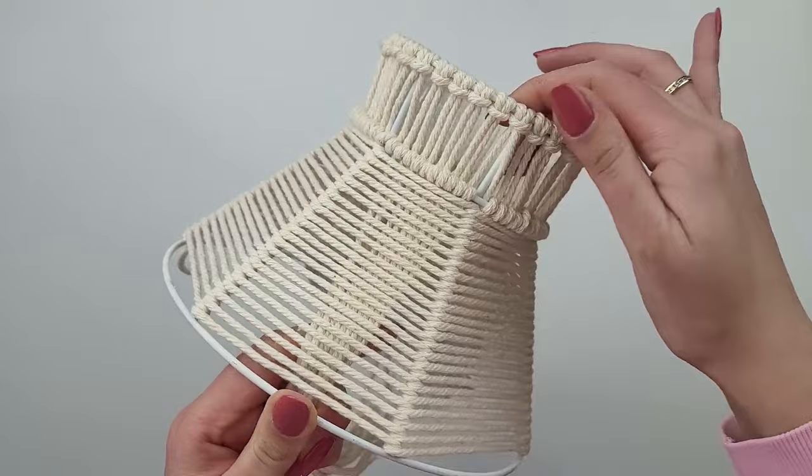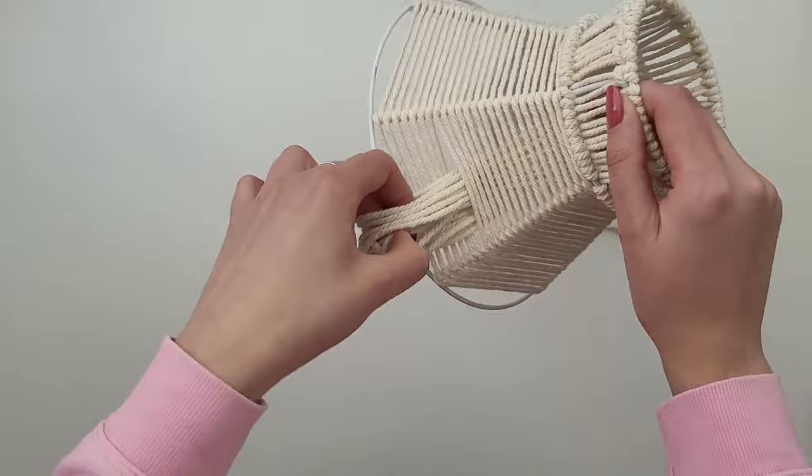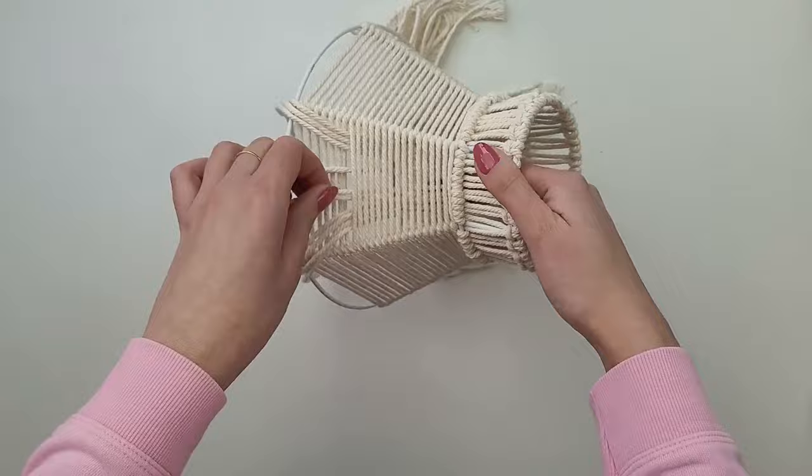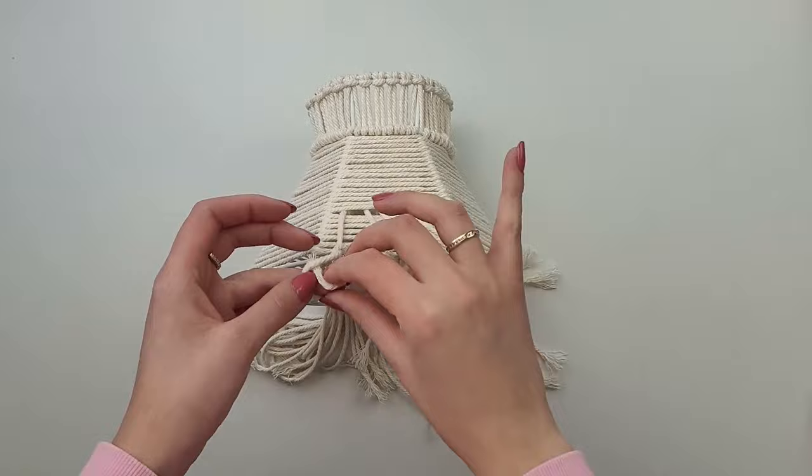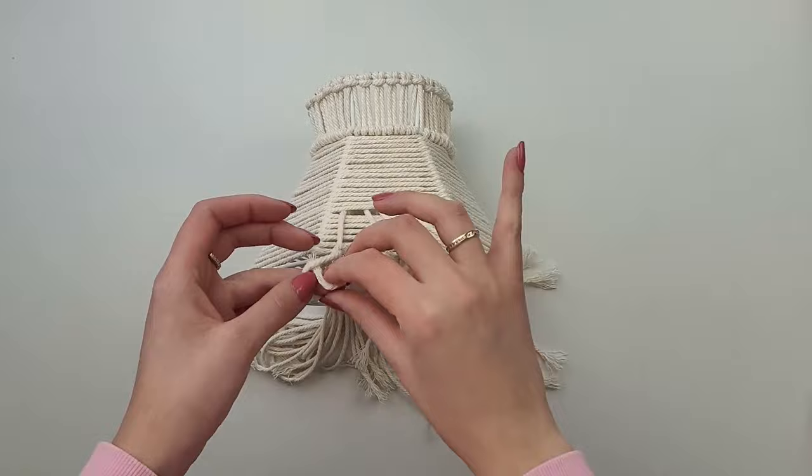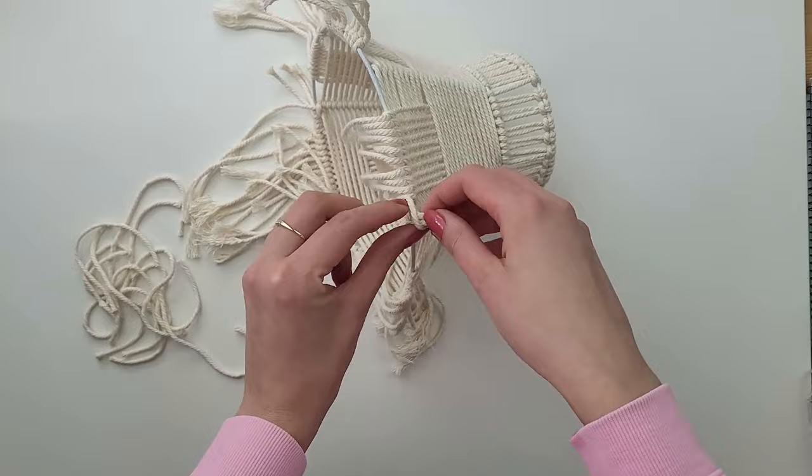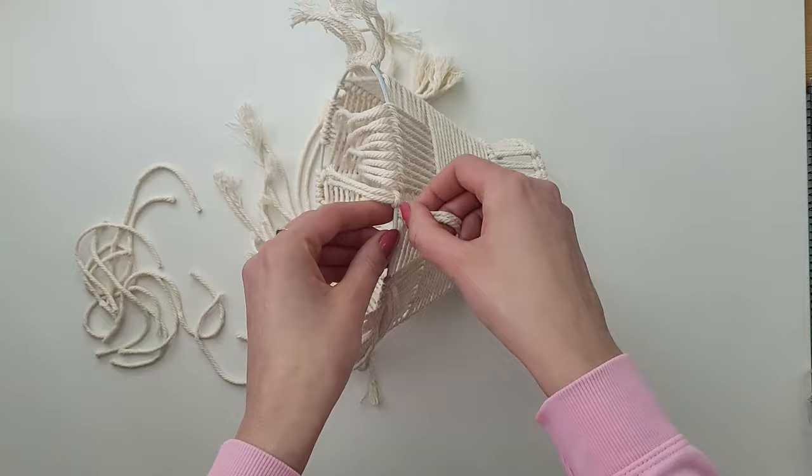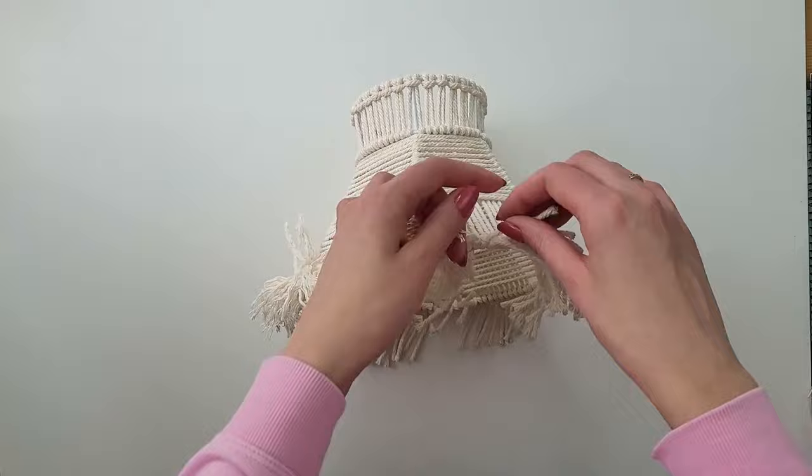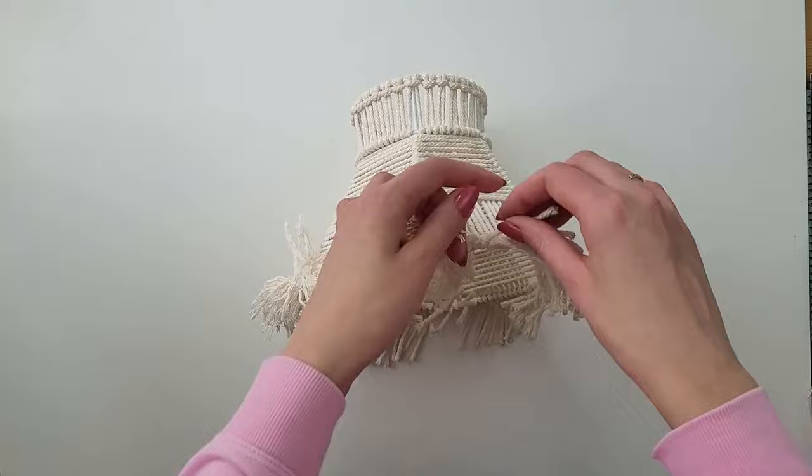I take loose cords from the top section and pull them through the middle section, then I wrap each individual cord around the wire. To fill up the gaps, I cut short pieces of cord and attach them to the bottom part with lark's head knots. I untwist all the cords and trim them to the same length.